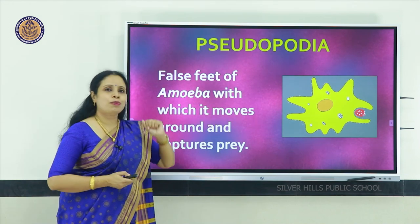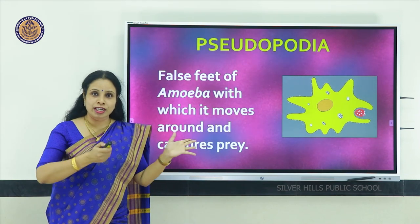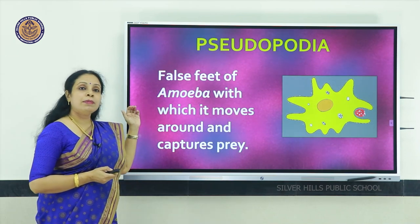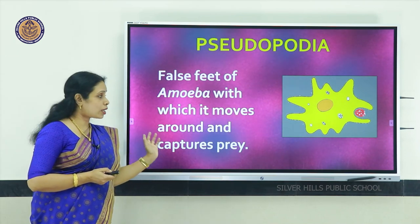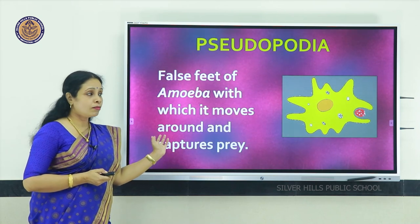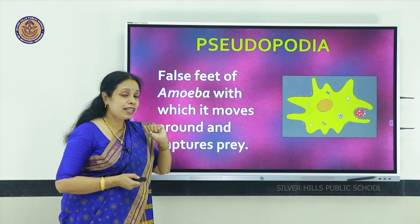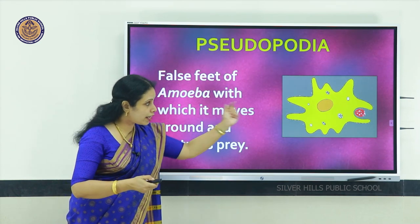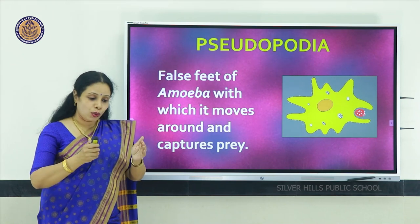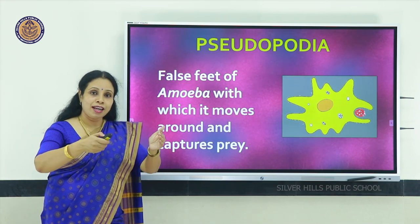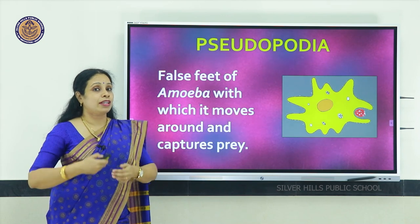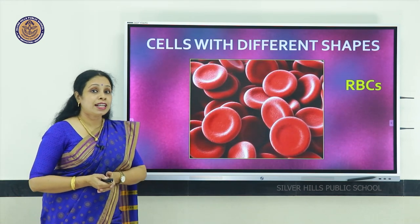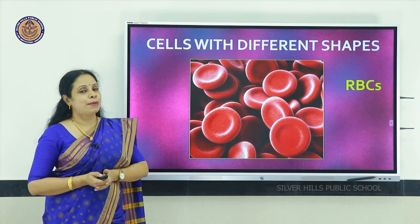The amoeba has projections that keep coming and going — false feet with which it can move around and also capture prey. You can see the amoeba is about to engulf a prey shown in red color; it has put forth its pseudopodia around the prey and soon it will be capturing it. So those were the unicellular organisms: paramecium and amoeba.